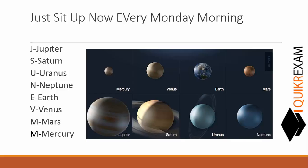The line is: 'Just sit up now every Monday morning.' Now concentrate only on the capital letters of this line — J for Jupiter, S for Saturn, U for Uranus, N for Neptune, E for Earth, V for Venus, M for Mars, and M for Mercury.